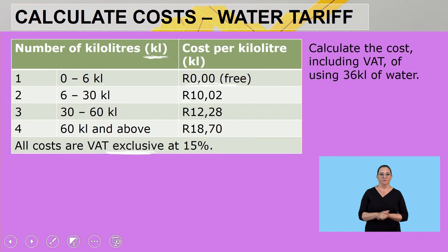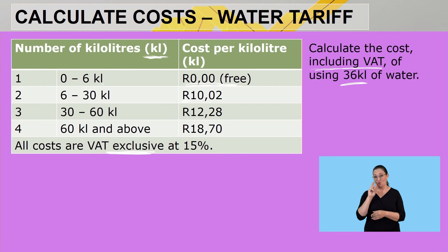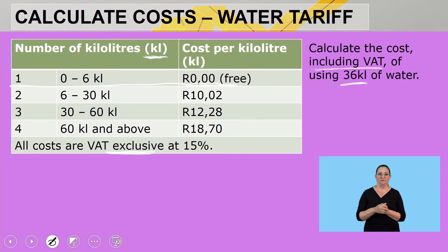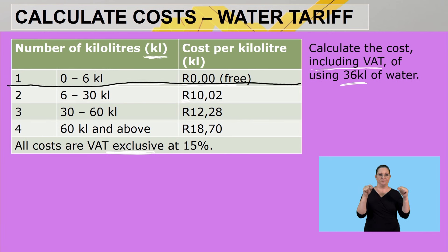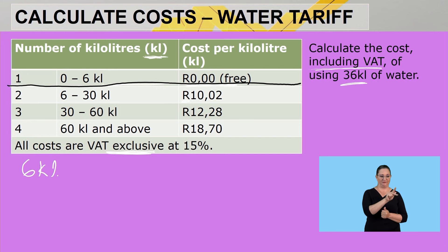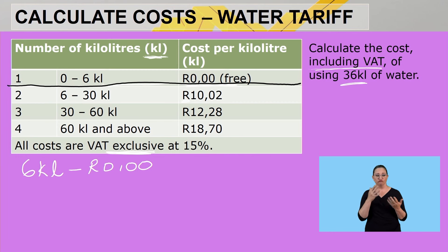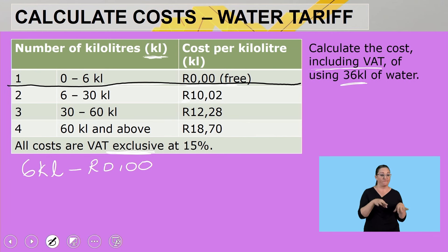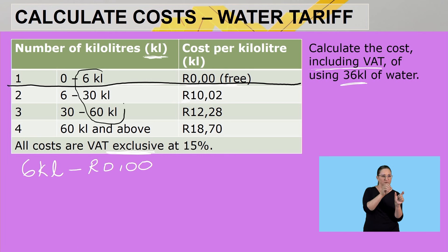Now we are to calculate the cost including VAT of using 36 kilolitres of water. Let us go to our table and calculate the total cost. Block number one — the first six kilolitres are for free, so the cost is zero rands. When you work with a sliding scale, you are going to only consider the values on your right.